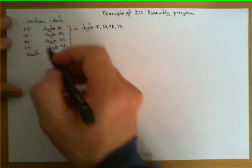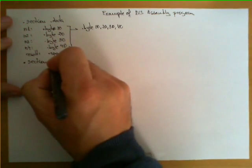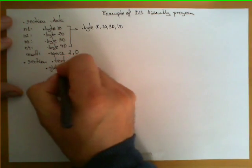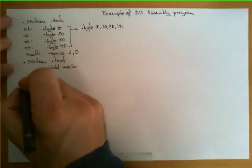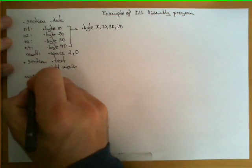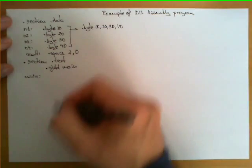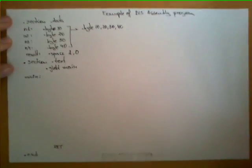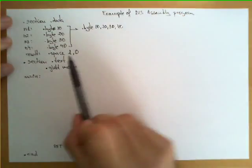Then remember that after the data section we can define another section with the .section.text directive in which we do .global main to declare the main label as global, and then with main colon we start the definition of the code which typically finishes with the instruction ret to say that we return and the directive .end. Now what kind of operations are we going to do here? Again, the program has to add these four numbers and place the result here.